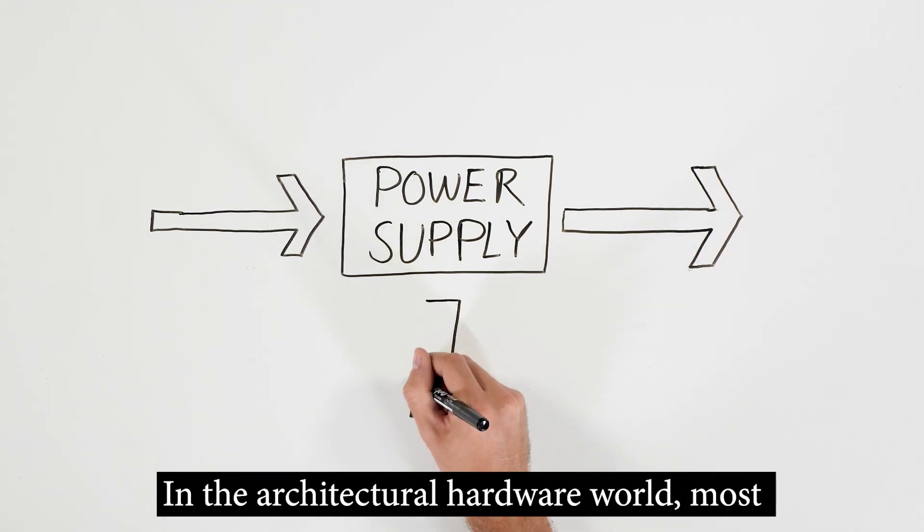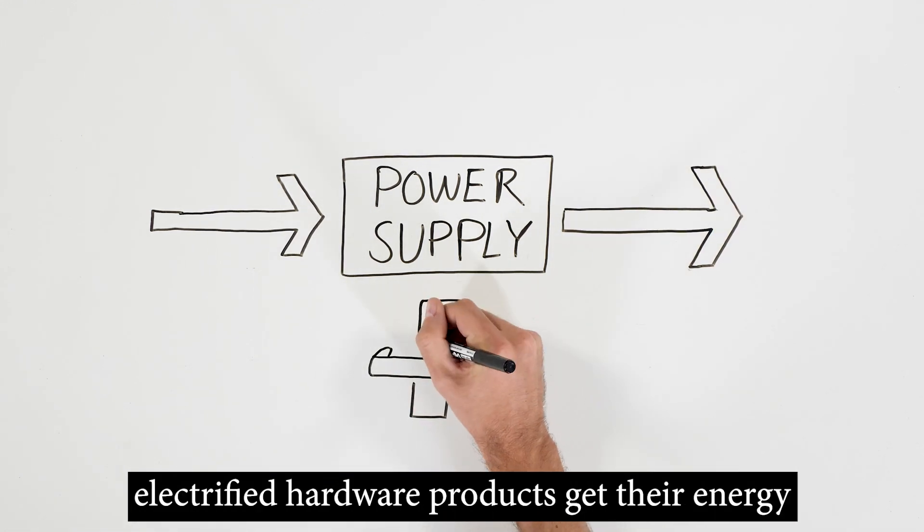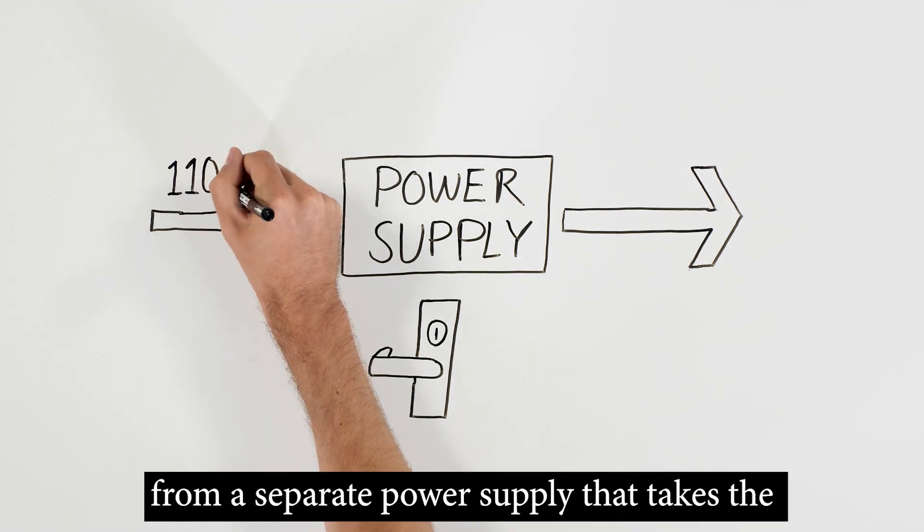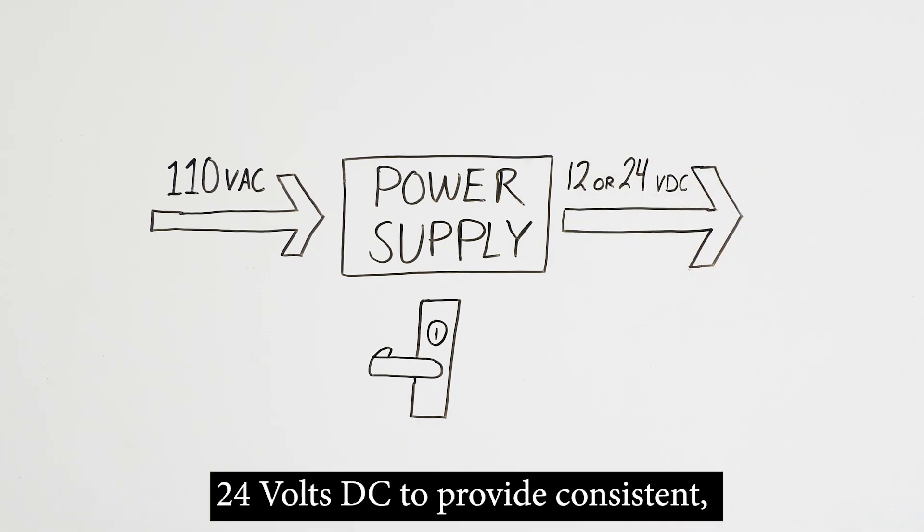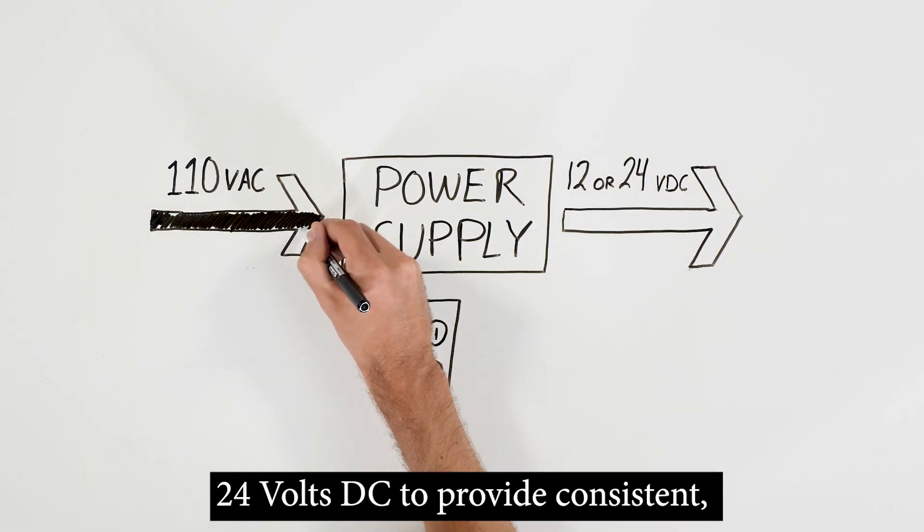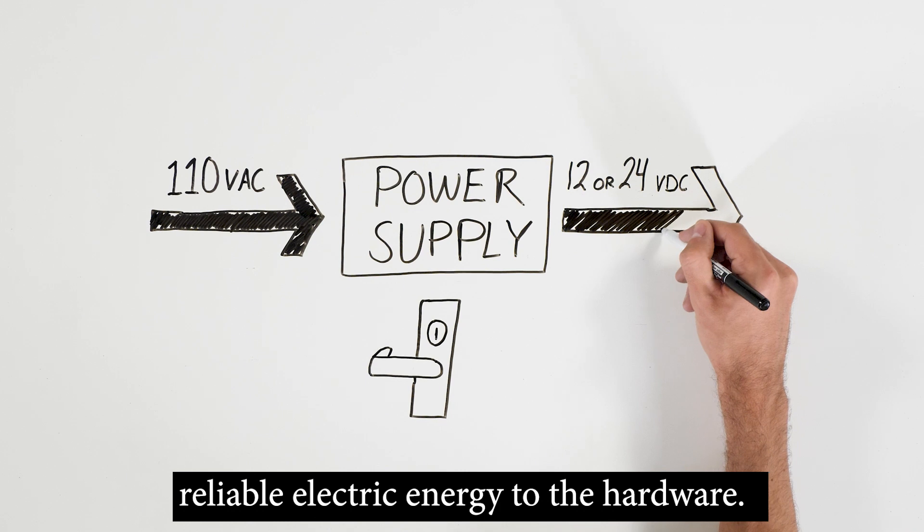In the architectural hardware world, most electrified hardware products get their energy from a separate power supply that takes the building's 110 volts AC and converts it to 12 or 24 volts DC to provide consistent, reliable electric energy to the hardware.